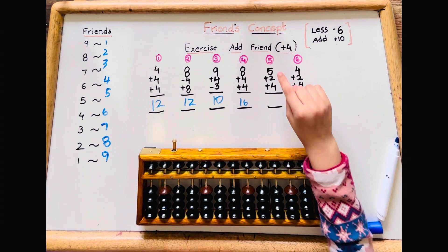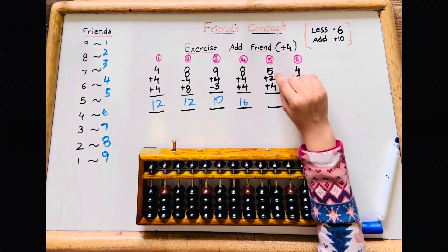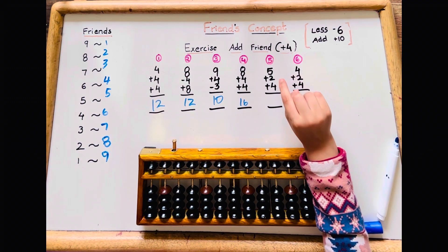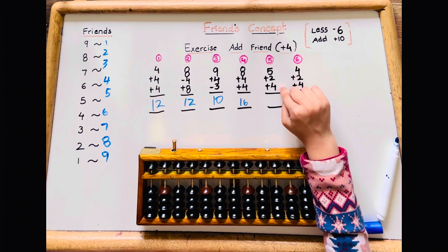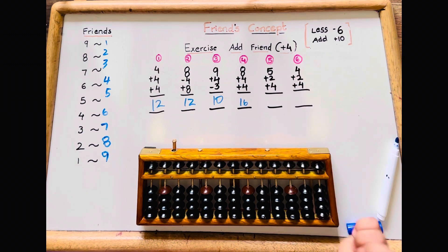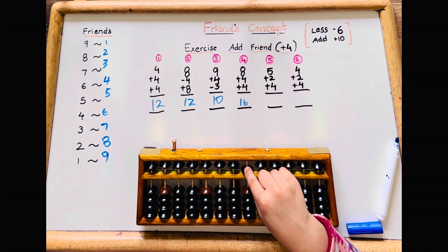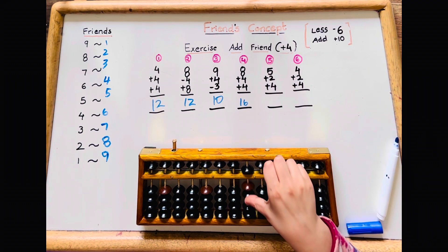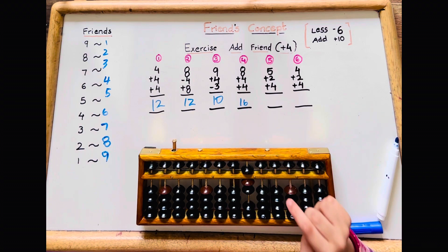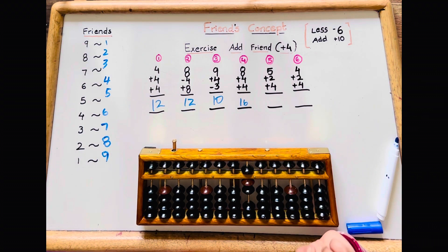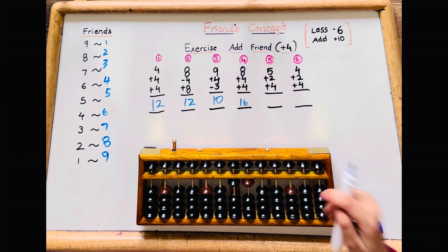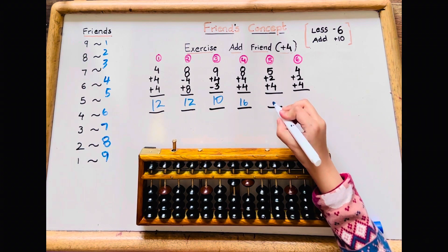Let's do the fifth sum: 5 plus 2 plus 4. There's no plus 4, so minus 6 add 10. The answer is 11.